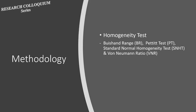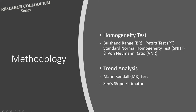Regarding the methodology, there are four homogeneity tests applied: Buishand range test, Pettitt test, standard normal homogeneity test, and Von Neumann ratio. These homogeneity tests are applied to ensure that measurements are recorded under the same environmental conditions using the same measurement technique. For trend analysis, the Mann-Kendall test is applied to identify positive or negative trends in the daily rainfall dataset, while Sen's slope estimator indicates whether the trend is significant based on its magnitude.